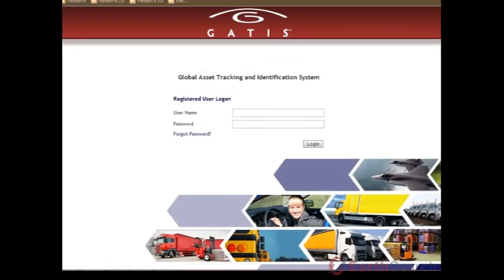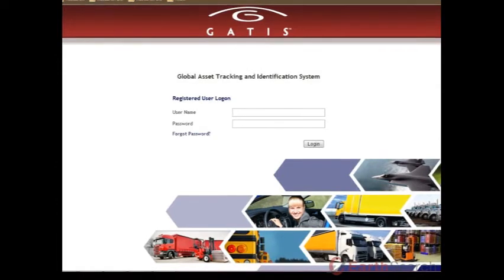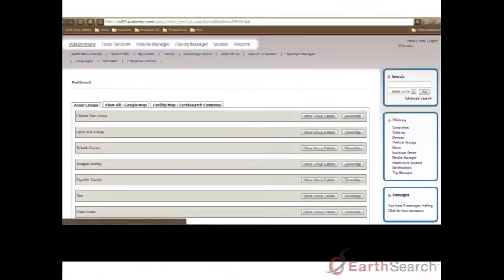GATTIS, the Global Asset Tracking and Identification System from Earthsearch. GATTIS is a web-based application which offers operations continuous visibility to see exactly what's happening in all of their Logibox and RFID equipped trucks in real time, all of the time.